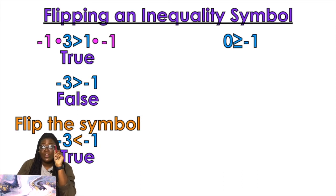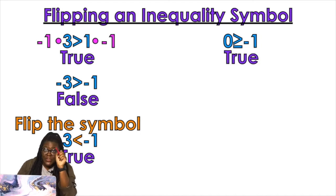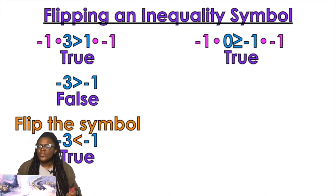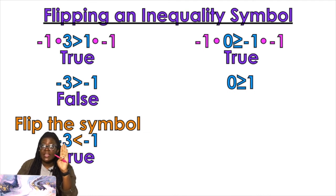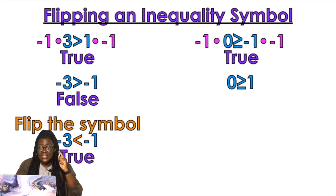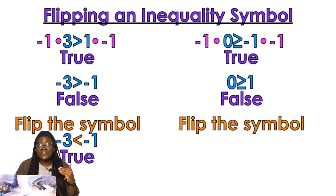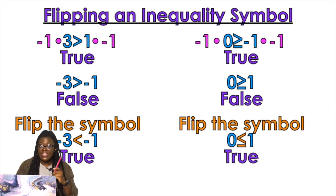Let's talk about zero being greater than or equal to negative one — true statement. Now what if I multiply both sides by negative one? Negative one times zero is zero, and negative one times negative one is positive one. So now my statement says zero is greater than or equal to one — that is false. So to make it a true statement, I must flip the symbol: zero is less than or equal to one. Now it is true.